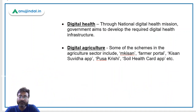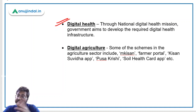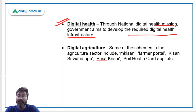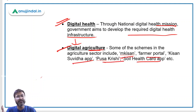The government will establish a National Education Technology Forum. In digital health, there are many initiatives: Ayushman Bharat Card, m-health services, and the e-Sanjeevani portal. The government also announced the National Digital Health Mission to develop required digital health infrastructure. Regarding digital agriculture, to digitalize the agriculture sector there are various schemes: mKisan, Farmer Portal, Kisan Suvidha app, Pusa Krishi, and Soil Health Card app — there are many initiatives being taken by the government in this space.